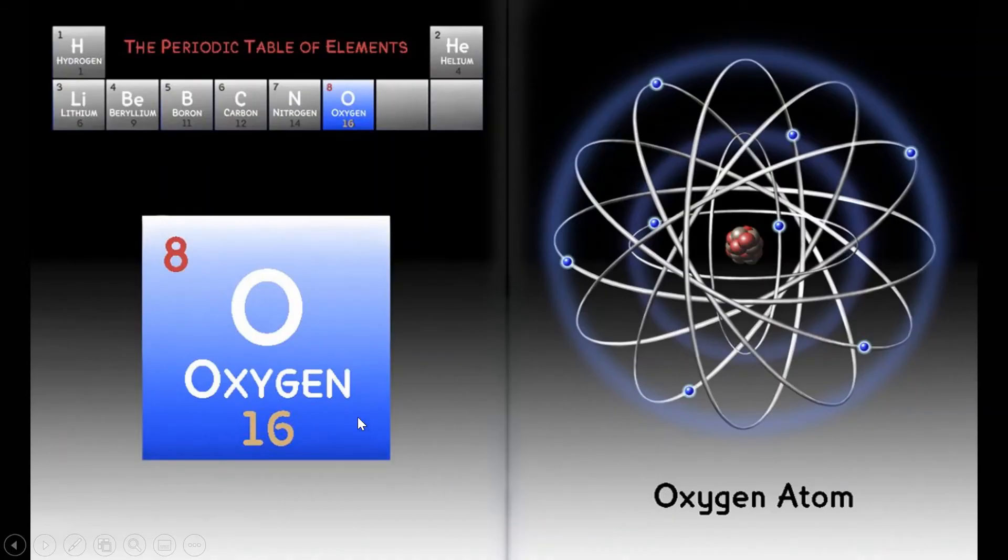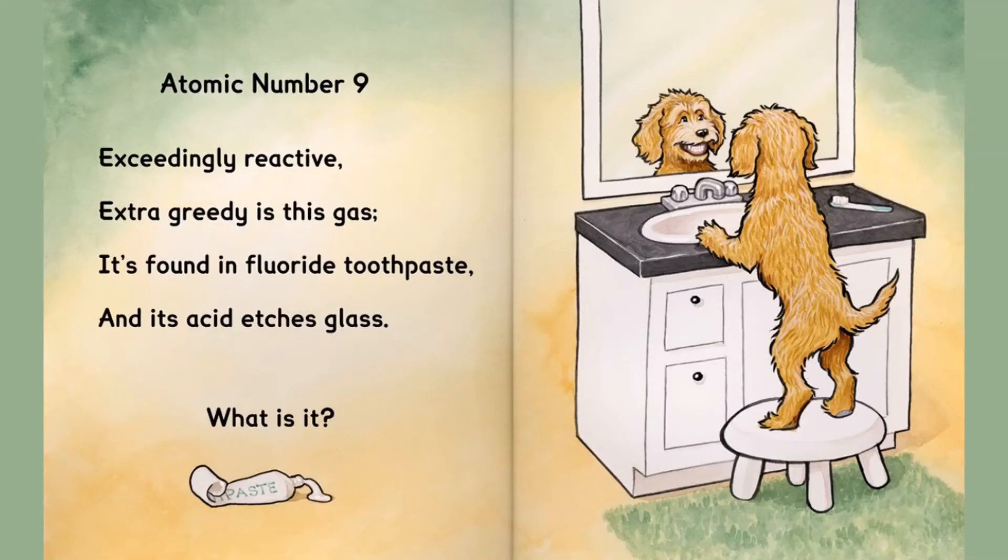Oxygen. Oxygen atom. Atomic number nine. Exceedingly reactive, extra greedy is this gas. It's found in fluoride toothpaste and its acid etches glass. What is it?